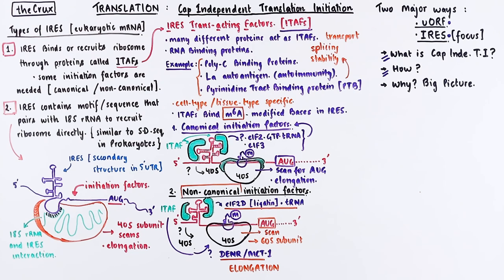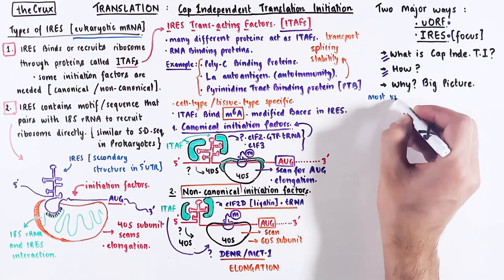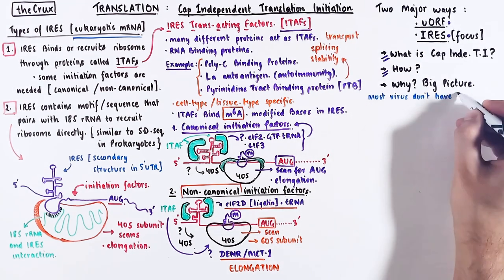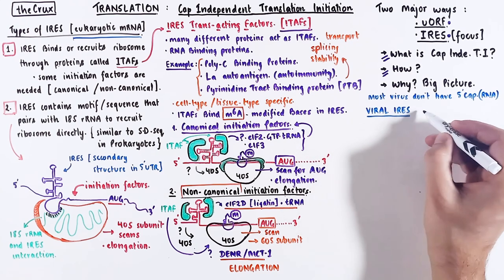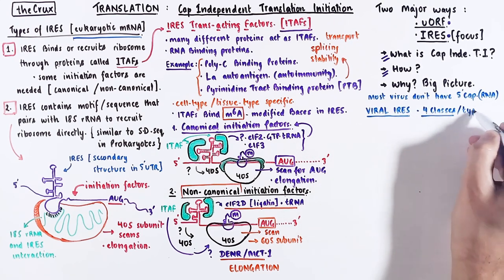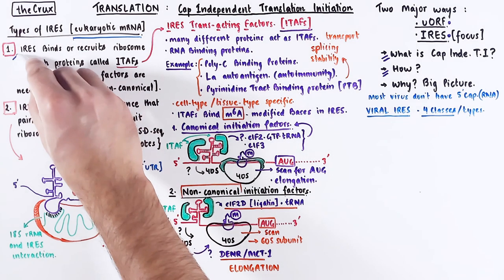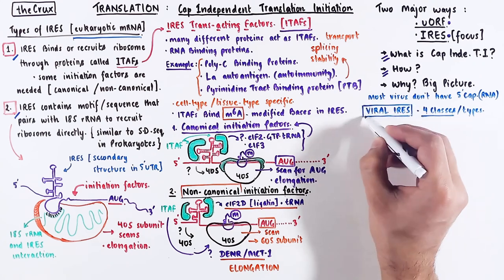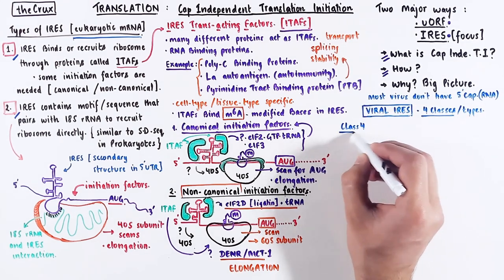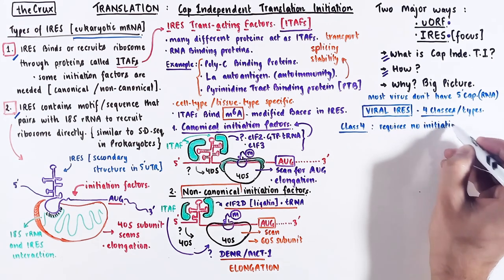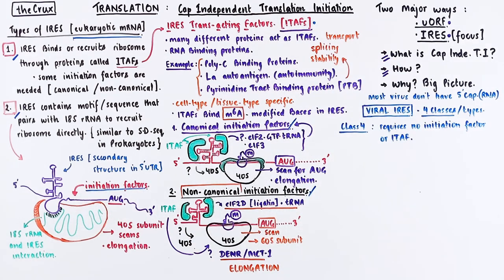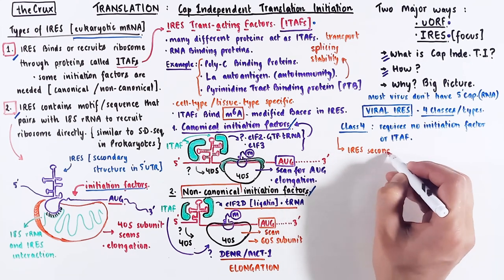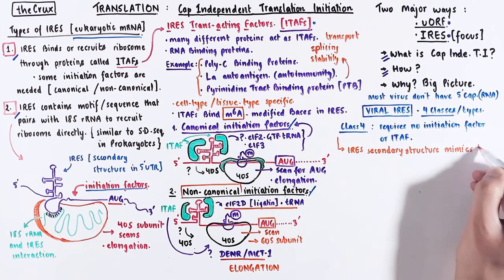Even some viruses have internal ribosome entry sites, and quite a lot of them don't even have a 5' cap in their mRNA. There are four classes of viral IRES. The first three classes are similar to the two types of IRES seen in eukaryotes. But class 4 IRES is very interesting because it requires no initiation factors or ITEFs — it does not depend on canonical or non-canonical initiation factors. The remarkable property of class 4 IRES is that it forms a secondary structure which mimics the tRNA structure itself.